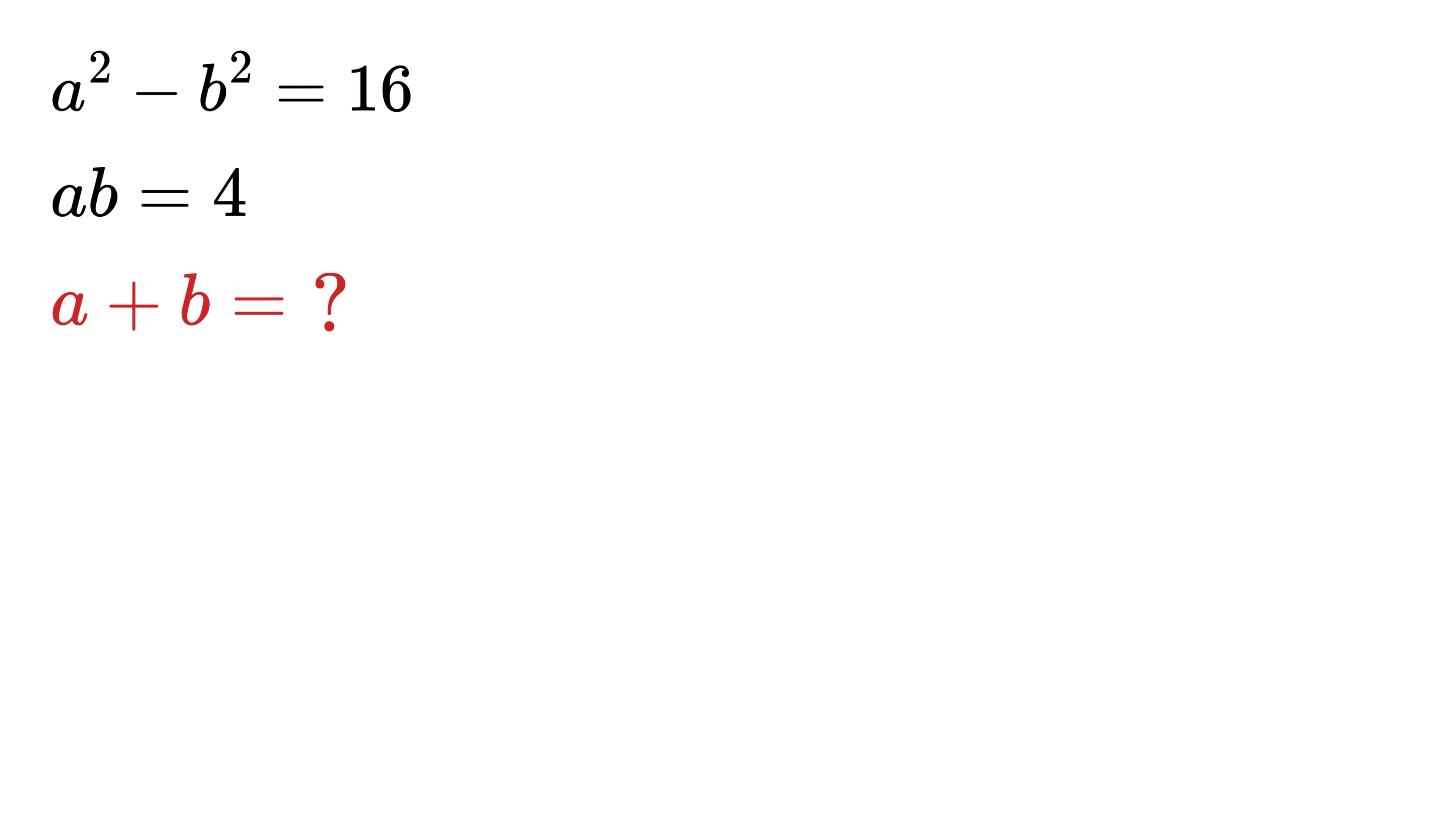We will start with the first equation. A squared minus B squared equals 16. We all might have heard about this well-known standard identity where A squared minus B squared is the same as A plus B times A minus B, right? So substitute it here. So A minus B can be written as 16 over A plus B.